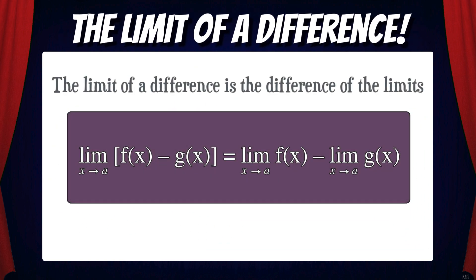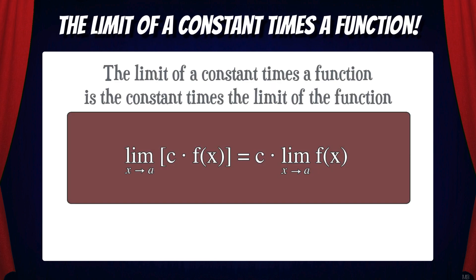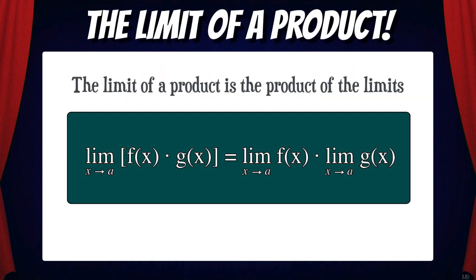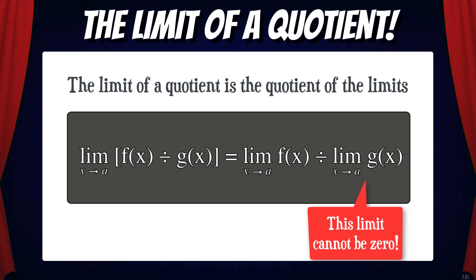Let's continue by looking at the limit of a difference. The limit of a difference is the difference of the limits. Next we have the limit of a constant times a function. The limit of a constant times a function is the constant times the limit of the function. Next we have the limit of a product — the limit of a product is the product of the limits. And we also have the limit of a quotient — the limit of a quotient is the quotient of the limits. One thing to keep in mind: the limit of the second function cannot equal zero because then we would be dividing by zero.